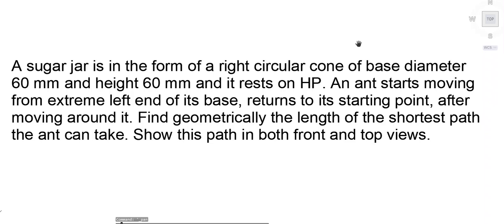Hello everybody. In this video we will see a question based on development of surface. The question is like this: A sugar jar is in the form of a right circular cone of base diameter 60 mm and height 60 mm, and it rests on HP. An ant starts moving from the extreme left end of the base, returns to its starting point after moving around it. Find geometrically the length of the shortest path the ant can take. Show this path in both front view and top view.